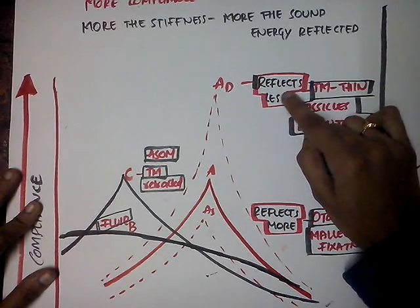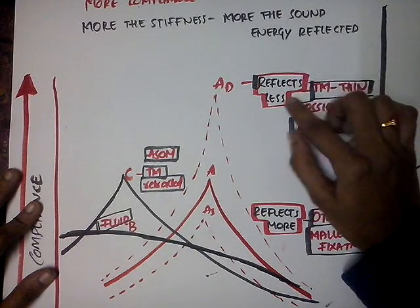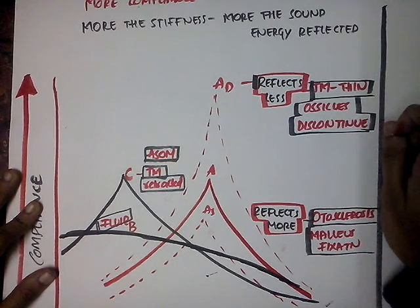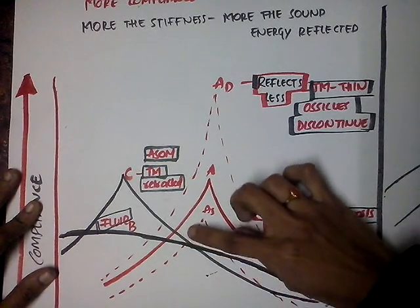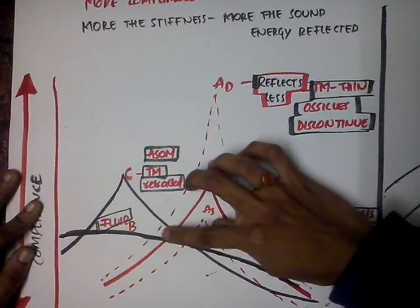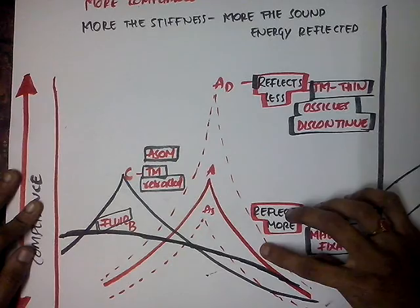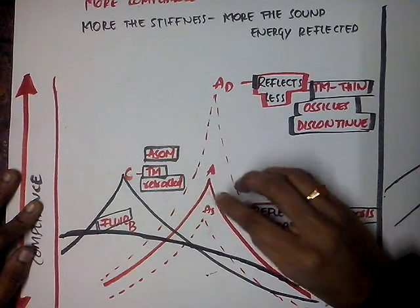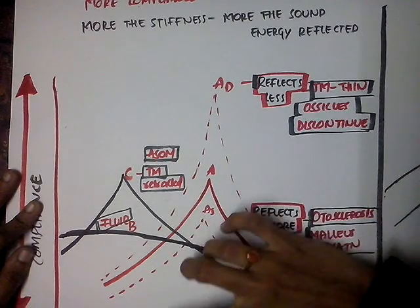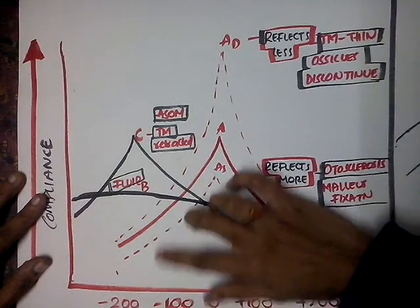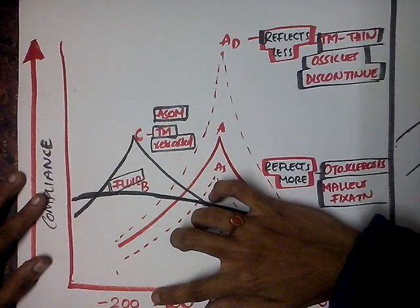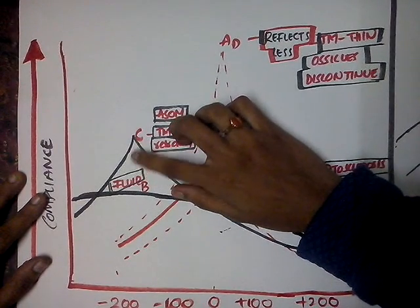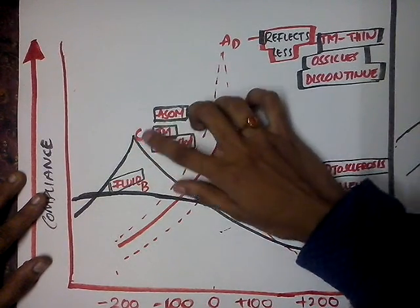AD deep curve indicates less reflection of sound, seen in thin tympanic membrane and ossicular discontinuity. Type B shows no change in sound energy reflected even when pressures change, due to fluid in the middle ear. In ASOM without fluid, the tympanic membrane is retracted due to negative pressure, so maximum compliance occurs at minus 200 when the externally generated negative pressure equals the negative pressure in the middle ear.